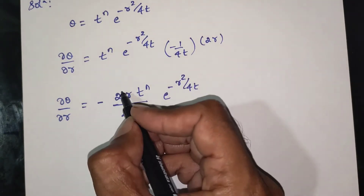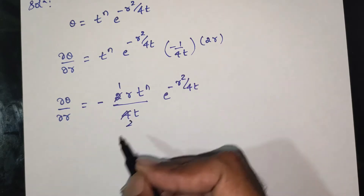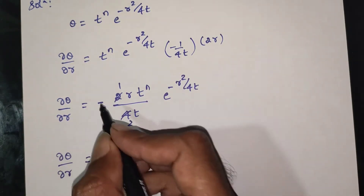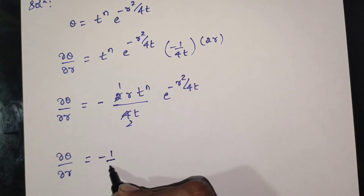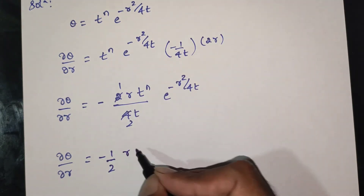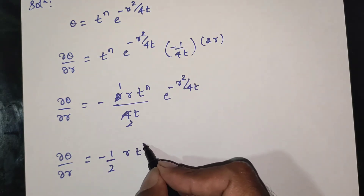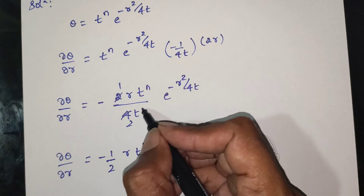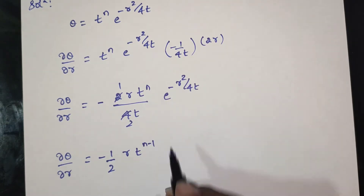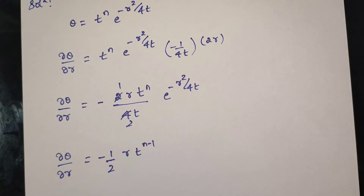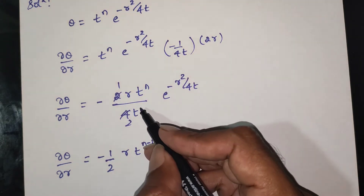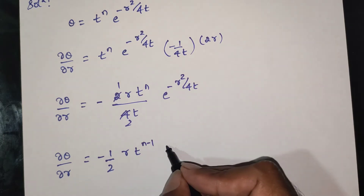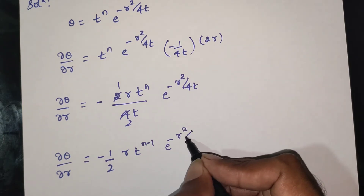Simplifying: ∂θ/∂r is equal to (-1/2) · r · t^n · e^(-r²/4t) divided by t, which gives minus (r · t^(n-1) · e^(-r²/4t)) divided by 2.